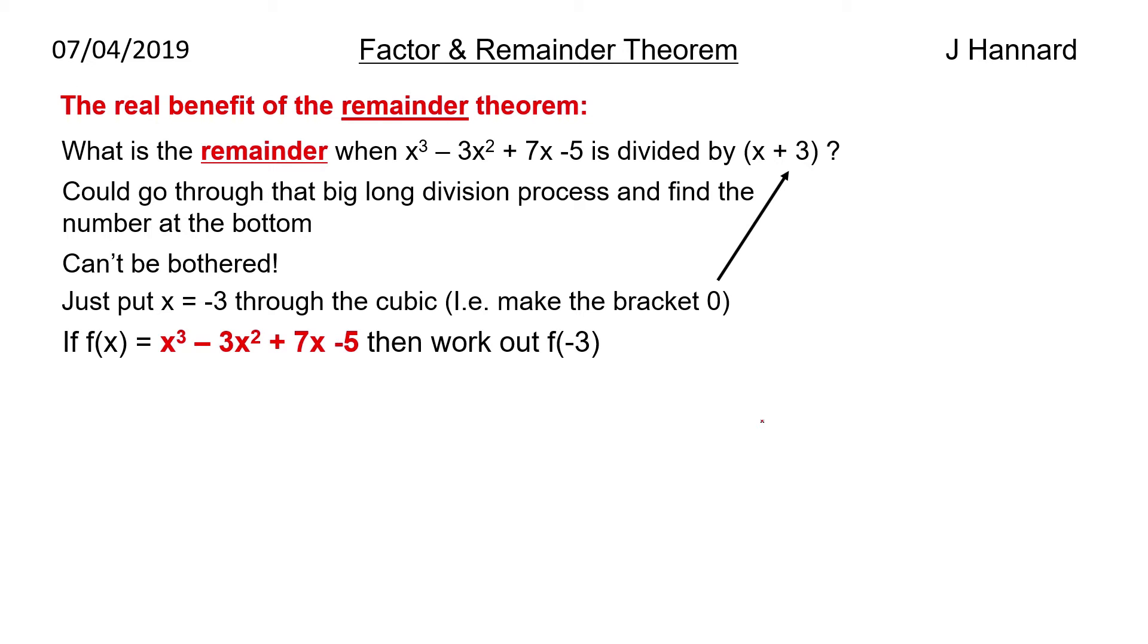So if f of x equals that, then work out f of minus 3. So we say minus 3 cubed minus 3 times minus 3 squared plus 7 times minus 3 minus 5. And we get that. Remember a negative cube to be a negative, a negative square to be positive. So we get minus 27 plus minus 27 plus minus 21 minus 5, which is minus 80. So that is the remainder of that when it's divided by x plus 3.